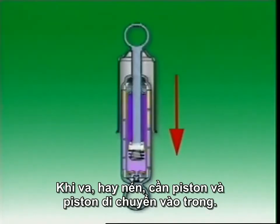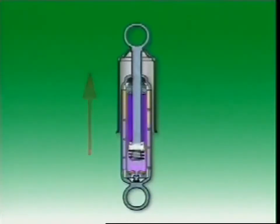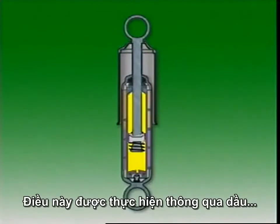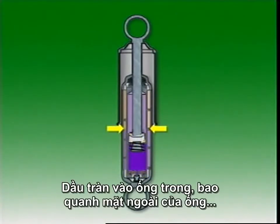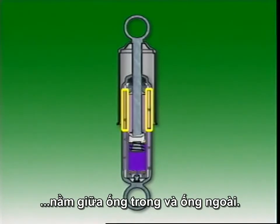The rod and its piston move into the shock absorber in bump; in rebound or extension, the rod and piston move out of the shock absorber. For dampening to be effective, resistance is needed in both directions. This is provided by the oil and by disc valves attached to the piston and the base of the inner tube. Oil fills the inner tube and surrounds its outer surface to a level which allows a free space or reservoir to exist above it between the inner and outer tubes.